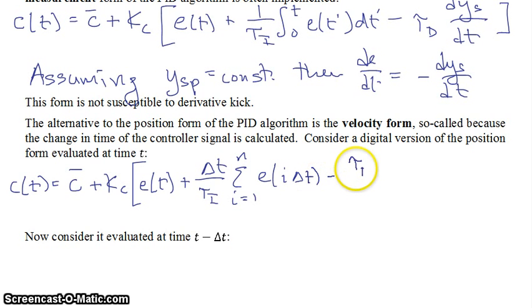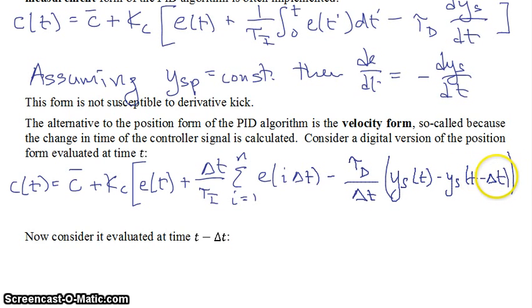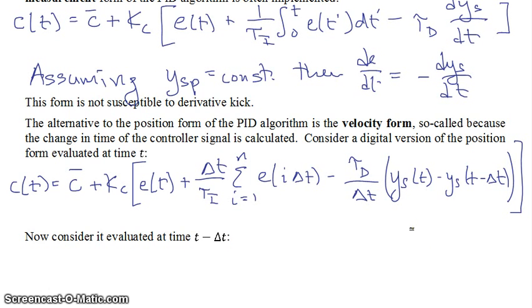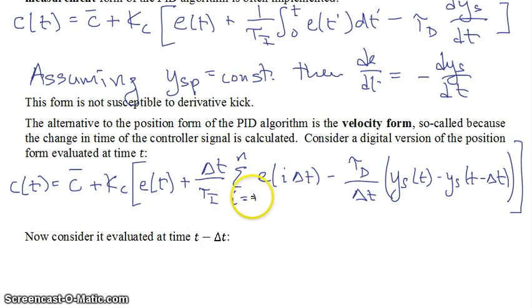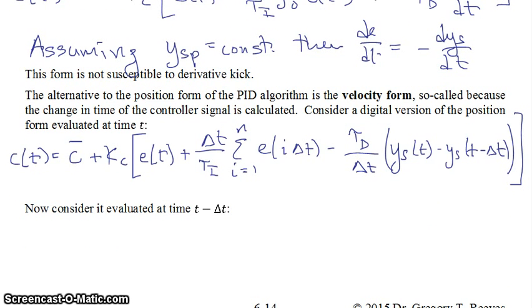Continuing the digital positional form: minus tau_d over delta_t times y_sensor at time t minus y_sensor at time t minus delta_t. What's inside those parentheses divided by delta_t is an approximation of the derivative. So that would be our digital version of the positional form with derivative on measurement, where instead of a continuous integral and derivative, we use discrete time points summed from i equals 1 to n and a difference between the last two time points to approximate the derivative.